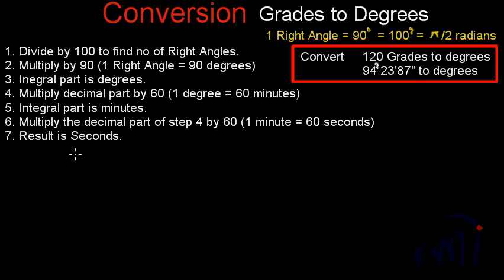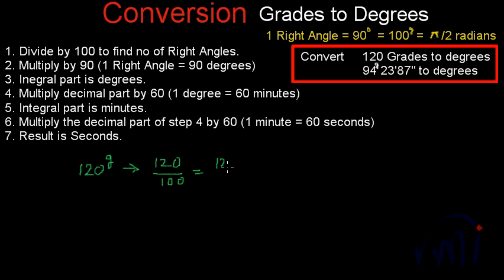First, we have to convert 120 grades to degrees. We first divide it by 100 to find the number of right angles. So this will be equal to 120 divided by 100, that is 12 by 10 number of right angles, because one right angle is equal to 100 grades. Then we multiply by 90, because one right angle is equal to 90 degrees.